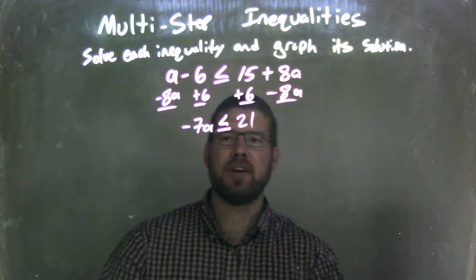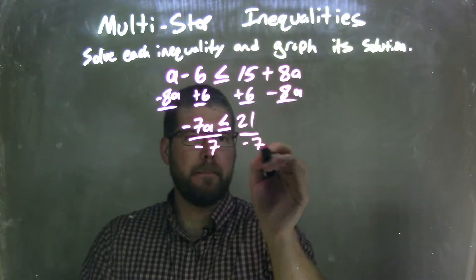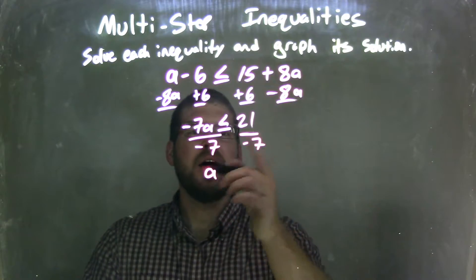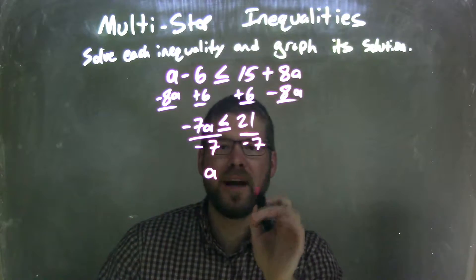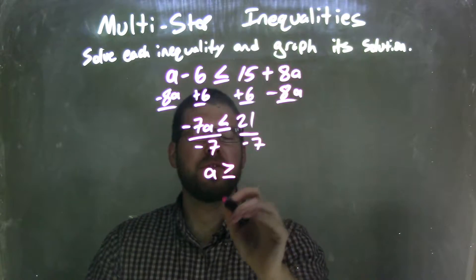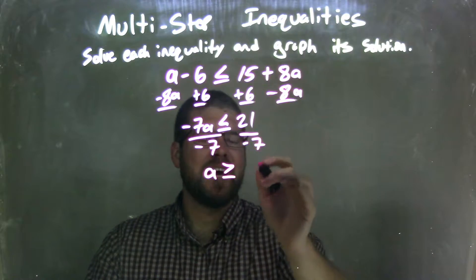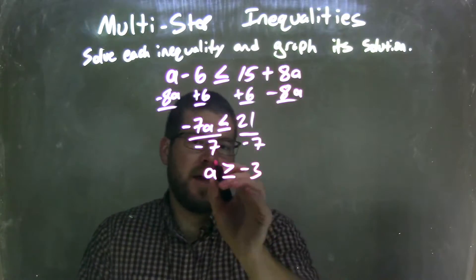Well now I need to get a by itself, so I'm going to divide by negative 7 on both sides. Now since I divided by a negative over the inequality, that inequality needs to flip from a less than or equal to sign to a greater than or equal to sign. So we have a greater than or equal to 21 divided by negative 7 is negative 3. Positive divided by negative is a negative, and now we have a isolated.